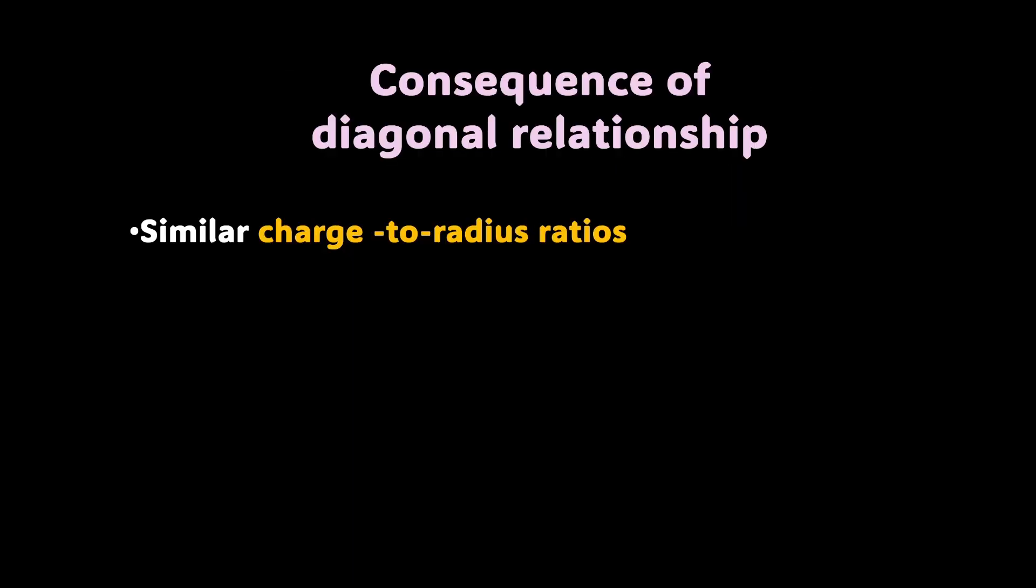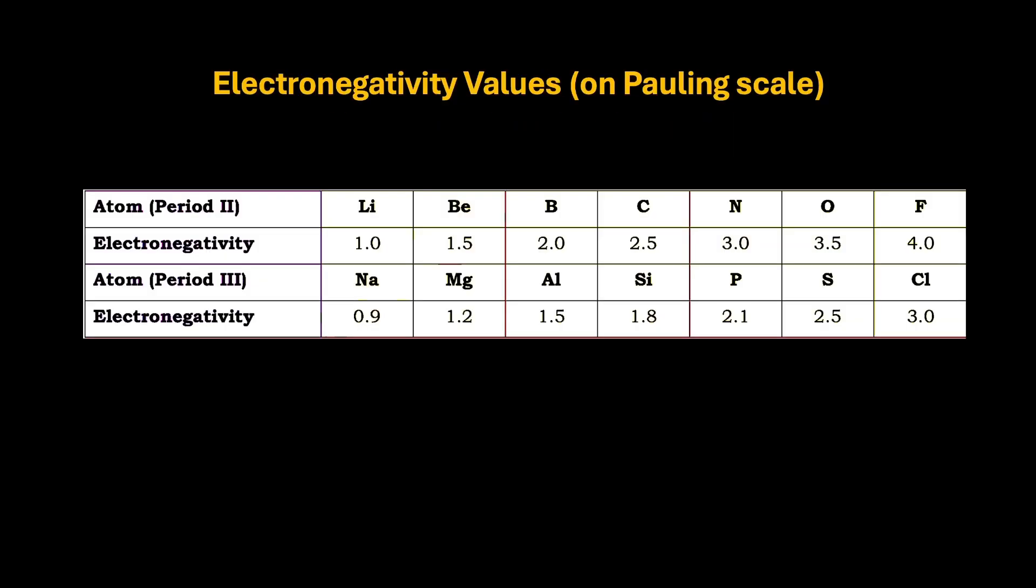And it's not just a similar charge to radius ratio, but you will see that in a diagonal, the electronegativities are very comparable as well. Let's take a look at the electronegativity data also. We know that electronegativity increases along the period, and when we are talking about electronegativity down the group, it decreases. So electronegativity decreases down the group, increases along the period. As a result, the counteracting effect is going to balance out in a diagonal.